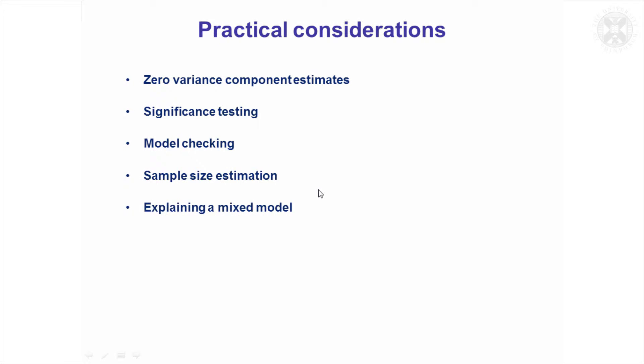Just a few practical considerations that you'll come up with when you start using these sorts of models. The variance components, as I said, they're only going to be positive if there's more variation than expected by chance due to a random effect. So if you had animals from different farms and you fitted farms, you'd only get a positive variance component for farms if there was more variation than you would expect by chance.